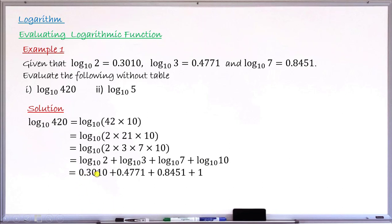So I substitute: log base 10 of 2 is 0.3010, log base 10 of 3 is 0.4771, log base 10 of 7 is 0.8451, and log base 10 of 10 equals 1 by the property of logarithms. Adding these four values correctly gives 2.6232. This is the value of log base 10 of 420 without using the table.